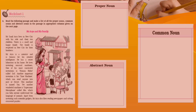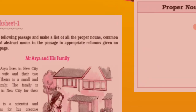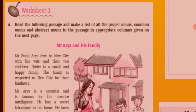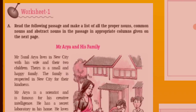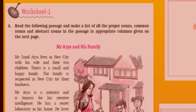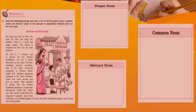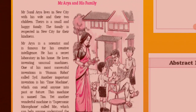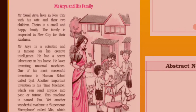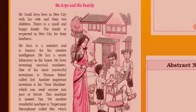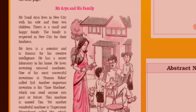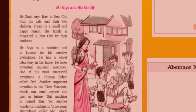Worksheet 1 says: read the following passage and make a list of all the proper nouns, common nouns, and abstract nouns. There are many nouns used in this paragraph. You need to identify only three types of nouns — that is proper noun, common noun, and abstract noun.